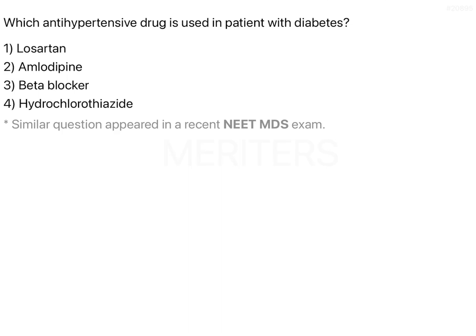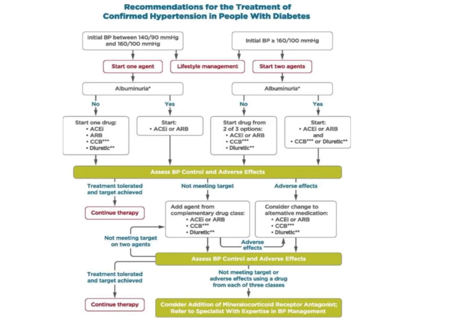The American Diabetic Association along with the American Heart Association have both come together to put forth a step-by-step process for how to tackle hypertension in patients with diabetes. For confirmed hypertension, the initial blood pressure target is 140/90, which is very important. Patients who are diabetic have to maintain their blood pressure in the range of 140/90, because if that is not managed it can lead to kidney damage.